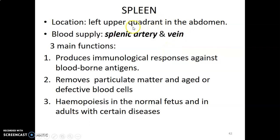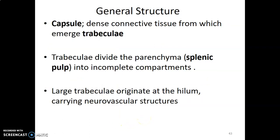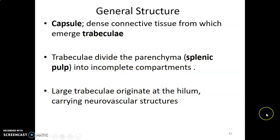The spleen is located in the left upper quadrant of the abdomen, supplied by the splenic artery and vein. It mounts immunological responses against blood-borne antigens, removes particulate matter and aged blood cells from circulation, and performs a hematopoietic role in normal fetuses and in certain adult diseases. The spleen is covered by a dense connective tissue capsule that sends trabeculi inward from the hilum, dividing the parenchyma into incomplete compartments while carrying neurovascular structures.